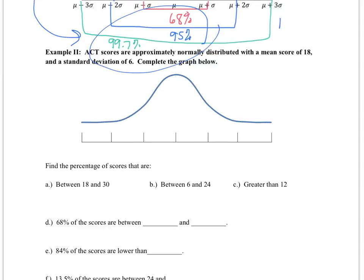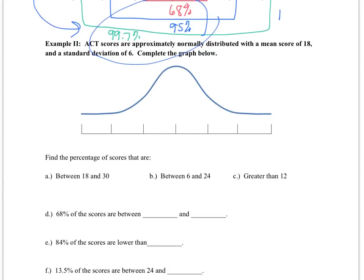Let's look at this first example below. Here we have ACT scores are approximately normally distributed with a mean score of 18 and a standard deviation of 6. So some key words here. First of all, normally distributed means that we can use these percentages we just talked about. When I read that, I know that I can create a bell curve with the labels we just discussed. The mean score is 18 and the standard deviation is 6. So the mean is going to go in the middle and then the standard deviation basically tells me the scale for the graph. It tells me how much I count by since each tick mark represents one standard deviation above or below the mean.